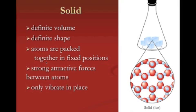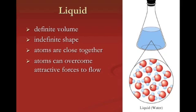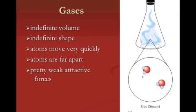As we move up through liquid and into gas, atoms start to spread out. In a solid, those atoms are so tightly packed together that they have very high attractive forces — they want to hold on to each other and not let go. A liquid has a definite volume but indefinite shape; atoms are still close together but have overcome some attractive forces, allowing them to move and take any shape of the container. Gases have indefinite volume and indefinite shape — atoms are moving very quickly, very far apart, with basically no attractive forces, just bumping into each other.